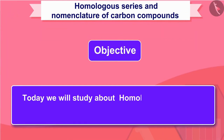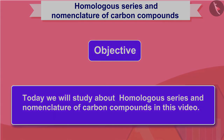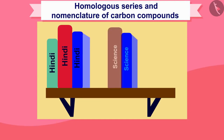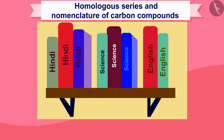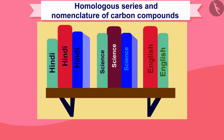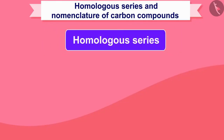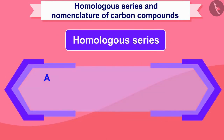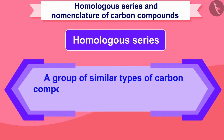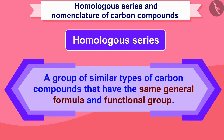Today we will study about homologous series and nomenclature of carbon compounds. Suppose we divided many books according to their subject — all the books of Hindi, English, Science, etc. were kept separately. As the name suggests, homologous carbon compounds can be defined as a group of similar carbon compounds that have the same general formula and functional group.